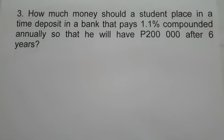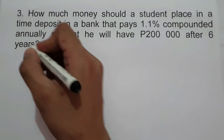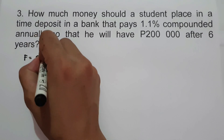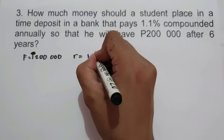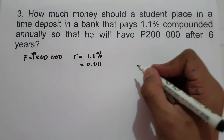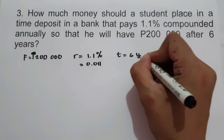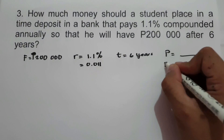On the last example: how much money should a student place in a time deposit in a bank that pays 1.1% compounded annually, so that he will receive 200,000 pesos after 6 years? Let us determine the given: future value is 200,000, rate is 1.1% or 0.011, and time is 6 years. We are looking for the principal, and let us also include compound interest.